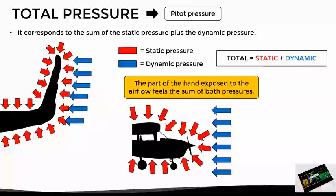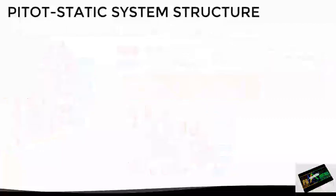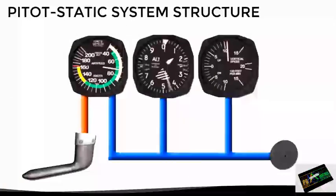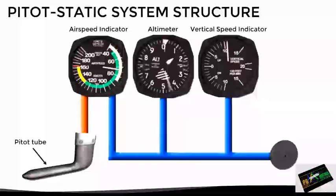Having understood all these definitions, let's now see what the pitot static system consists of. In its simplest form, it is composed of a pitot tube and a static port that feed the three instruments mentioned previously. The static port sends information to all three instruments — the airspeed indicator, the altimeter, and the vertical speed indicator — while the pitot tube only sends information to the airspeed indicator.